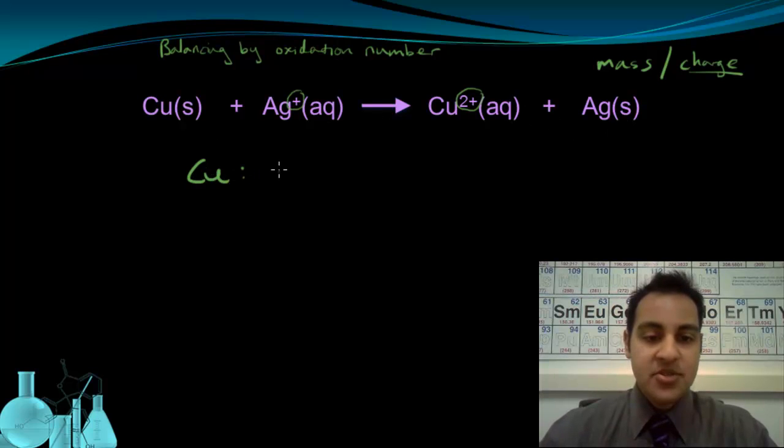So for copper, the copper starts as a zero, this one's zero, and it ends up as a +2 right here. The silver on the other hand, starts as a +1, we can see that right here.